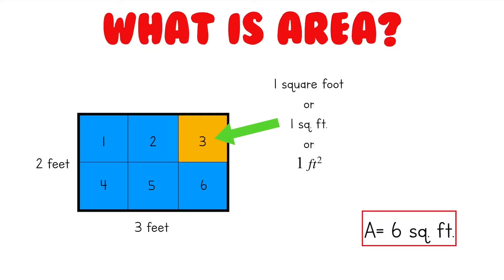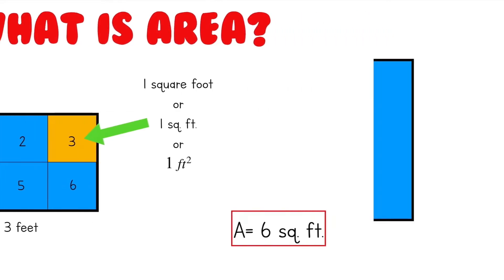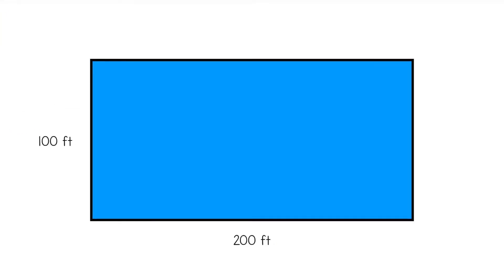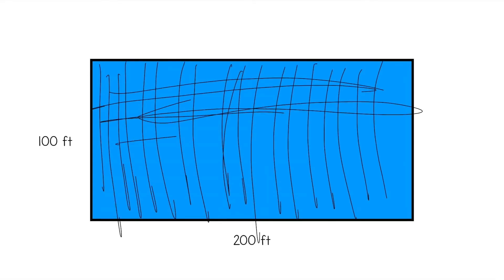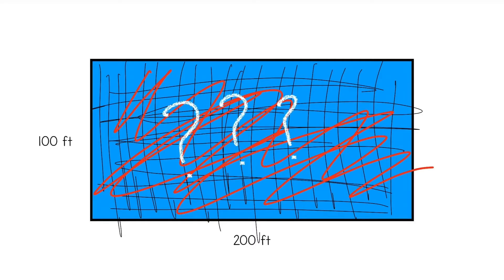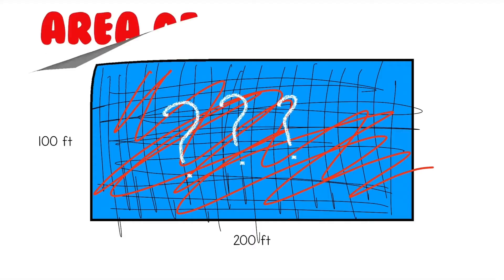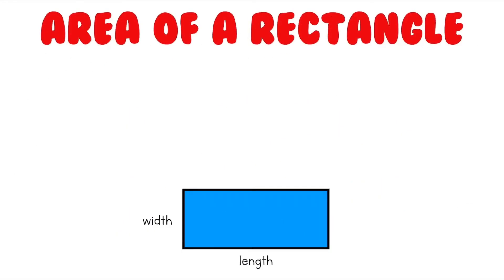So do we just draw in lines for all the feet and count the squares for all rectangles? Well, not exactly. Counting the squares for small rectangles like this is pretty simple, but imagine how difficult that would be for a huge rectangle, like one that is 200 feet long and 100 feet wide. Imagine just sitting at your desk drawing lines and counting squares all day long just to solve for the area of a rectangle. That sounds awful! Because of this, we have a super simple formula for finding the area of a rectangle.